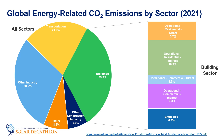During the operation of a residential or commercial building there are direct emissions and indirect emissions. Direct emissions are emitted on site from the direct combustion of fossil fuels. An example is natural gas burned in a boiler in the building — direct emissions are coming directly from the building.